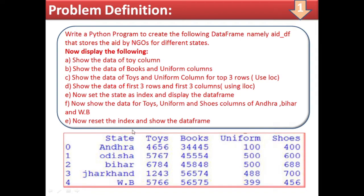Now show the data for twice, uniform, and shoes columns of Andhra, Bihar, and West Bengal. Then reset the index and show the data. This is the DataFrame to be created — various NGOs are donating toys, books, uniforms, and shoes, and the number of items donated is given here as a count.